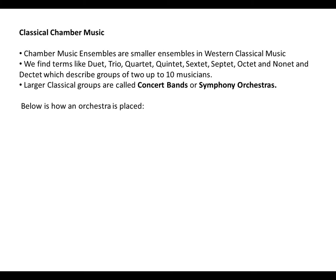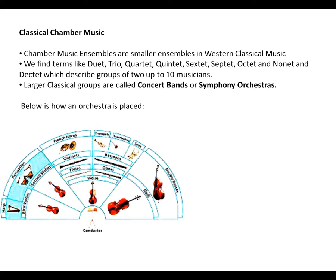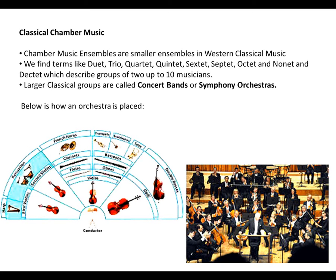Larger classical groups are called concert bands or symphony orchestras. We have a diagram of how the instruments in an orchestra would be sitting. On your left, we'll have the first violins and the second violins at the front. Then at the back, we have the harp and percussion. In the middle, we have the violins right at the front. The flutes and oboes are right next to each other. Clarinets and bassoons next to each other. Then at the back, French horns, trombones, trumpets and the tuba. Then on your left in the front, we have cellos, and right at the back, double basses. This is how it may look like on a front view.